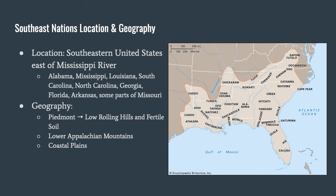Moving south, we have the Southeast nations, located in the Southeast region of the United States — states like North Carolina, South Carolina, Georgia, Alabama, and Mississippi. The geography that impacts the Southeast nations includes the low rolling hills and fertile soil of the Piedmont, parts of the Appalachian Mountains, and some coastal areas.